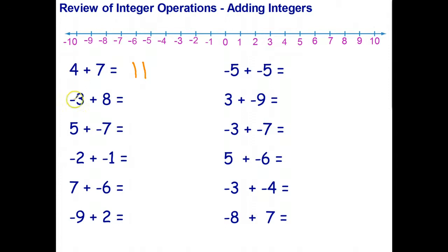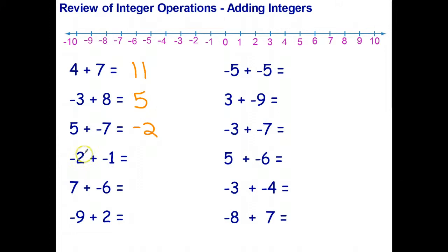I can pay off my bill and I still have five dollars remaining. In the third question I've got five dollars plus a bill for seven dollars. I can pay off part of the bill, but because the bill is more than the money I have, I still owe two dollars after I pay it off. Finally, negative two plus negative one — I've got two bills, a bill for two dollars and a bill for one dollar — altogether I owe three dollars.